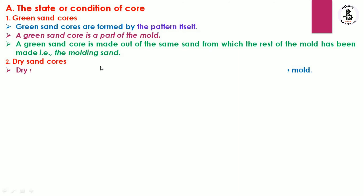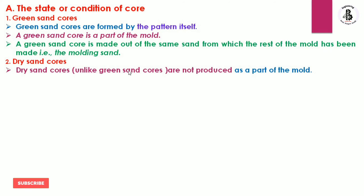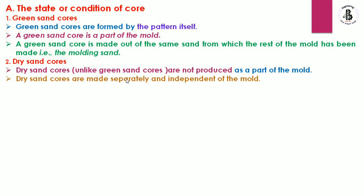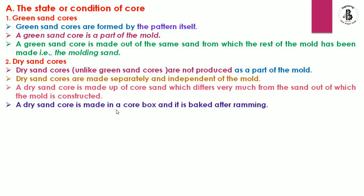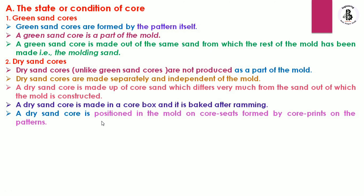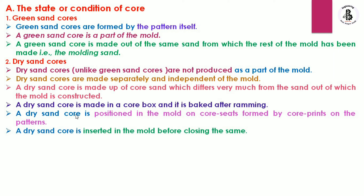The second type is dry sand cores. Unlike green sand cores, dry sand cores are not produced as a part of the mold. Dry sand cores are made separately and independently of the mold. A dry sand core is made of core sand which differs from the sand used for the mold. It is made in a core box and baked after ramming. A dry sand core is positioned into the mold on core seats formed by the core prints on the pattern, and is inserted into the mold before closing.